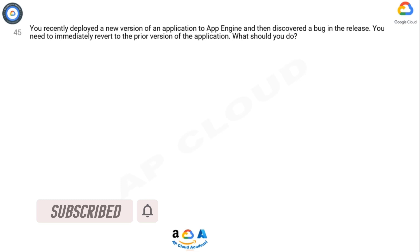Question. You recently deployed a new version of an application to App Engine and then discovered a bug in the release. You need to immediately revert to the prior version of the application. What should you do?